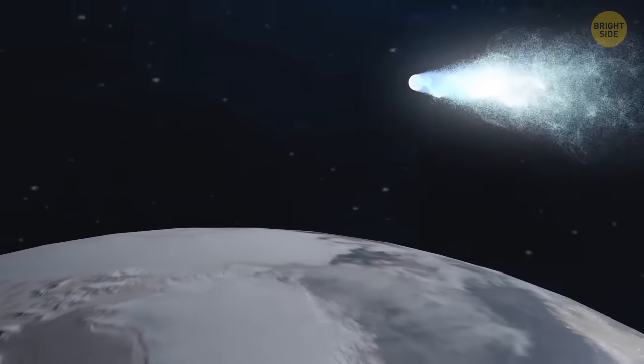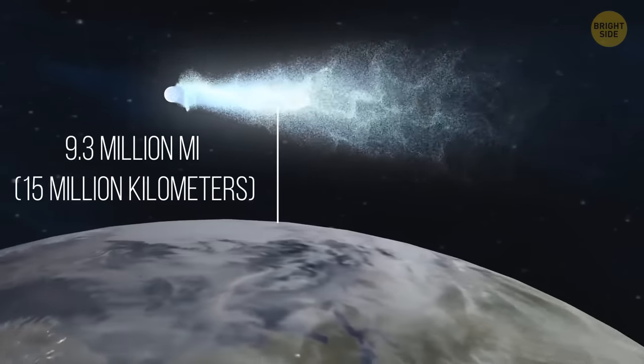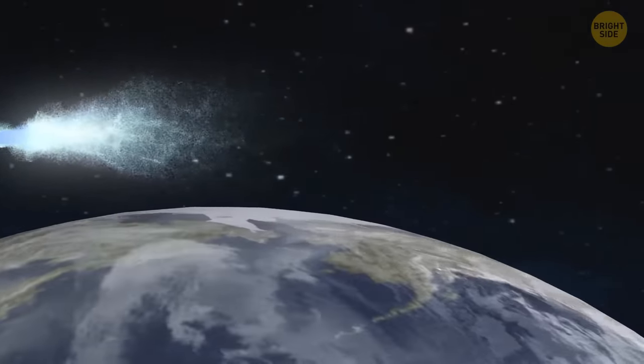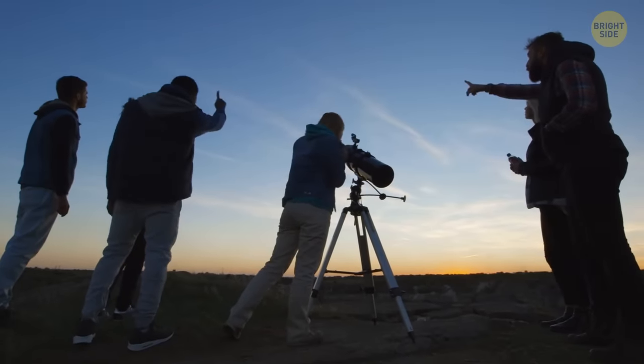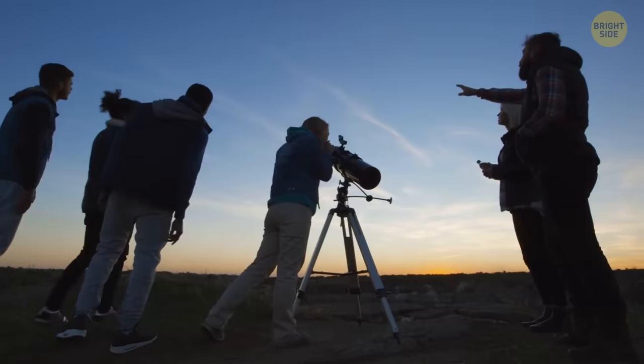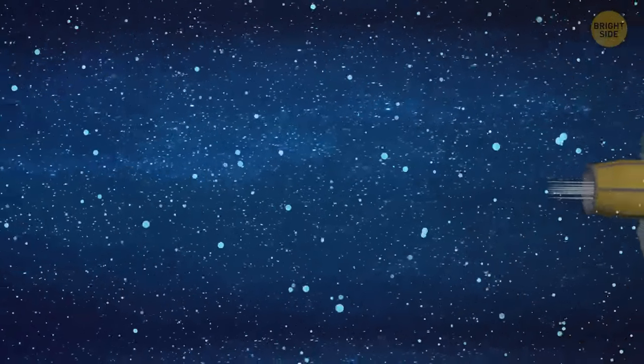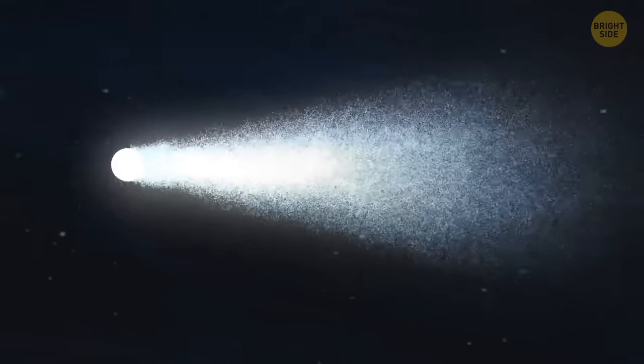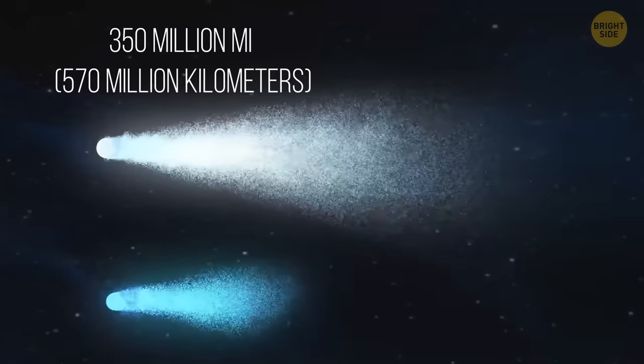Comet Hyakutake gave us quite the show when it passed just 9.3 million miles from Earth in March 1996. It looked like an ice blue splash with a faint gas tail. This comet amazed astronomers too, as it produced X-rays 100 times more intense than scientists had predicted. A spaceship called Ulysses passed through Hyakutake's tail in May 1996, reporting that it was at least 350 million miles long. That's double the size of any other known comet's tail.